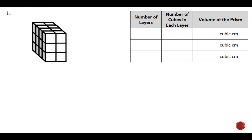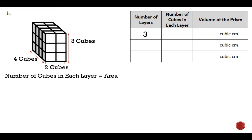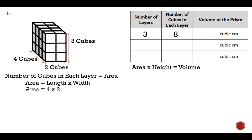Moving on to problem B. I'm going to find the number of layers and volume. My length is four cubes, my width is two cubes, and there are three cubes in height — so the number of layers is three. The number of cubes in each layer is the area: length times width, so 4 times 2 is 8. Eight cubes in each layer, multiplied by a height of three, gives us the same volume of 24 cubic centimeters.